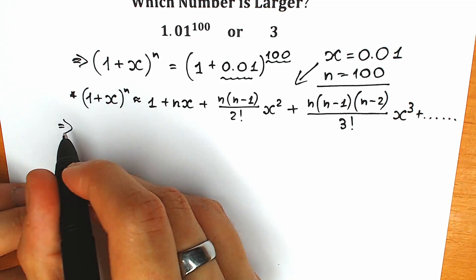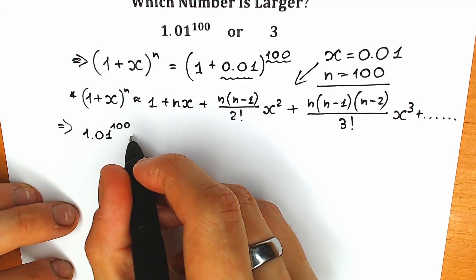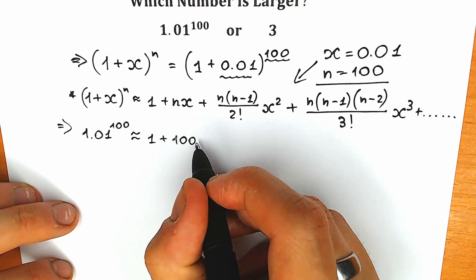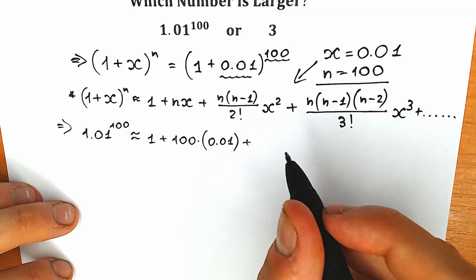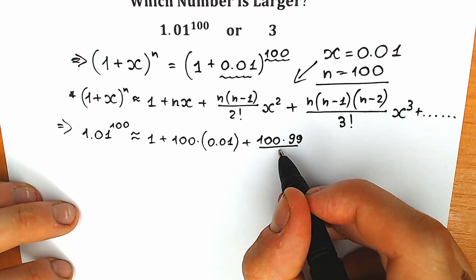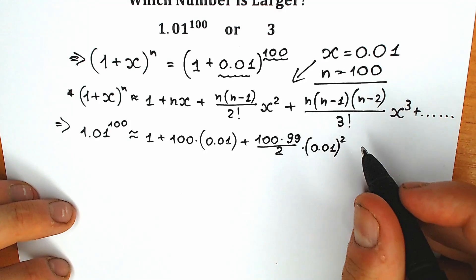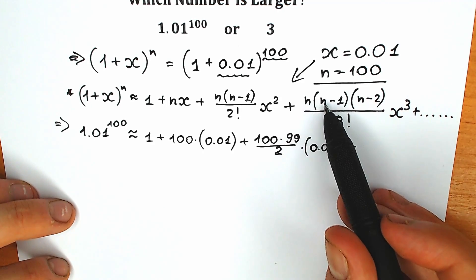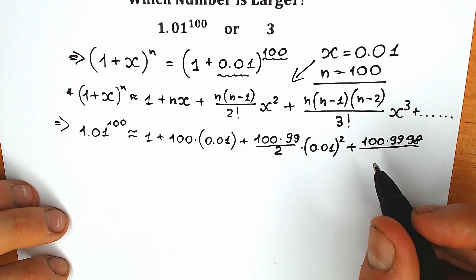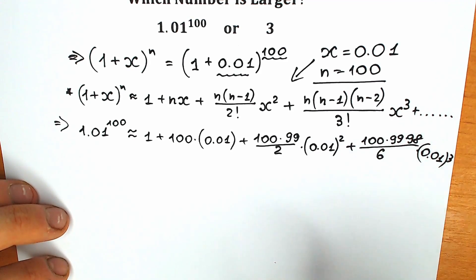So 1.01 to the power 100 is approximately equal to 1, plus 100 times 0.01, plus (100 times 99)/2 times (0.01) squared, plus (100 times 99 times 98)/6 times (0.01) to the power 3. Let's compute each of these terms step by step.